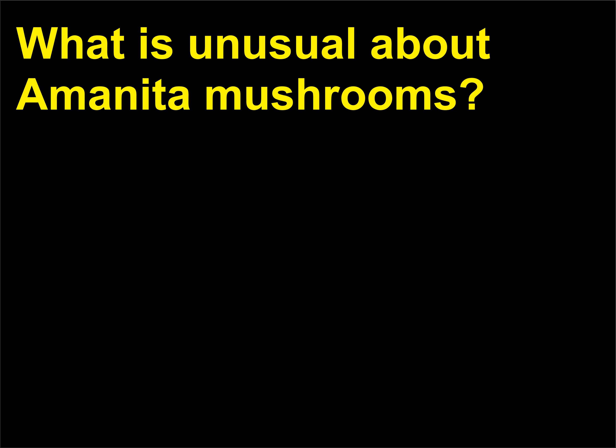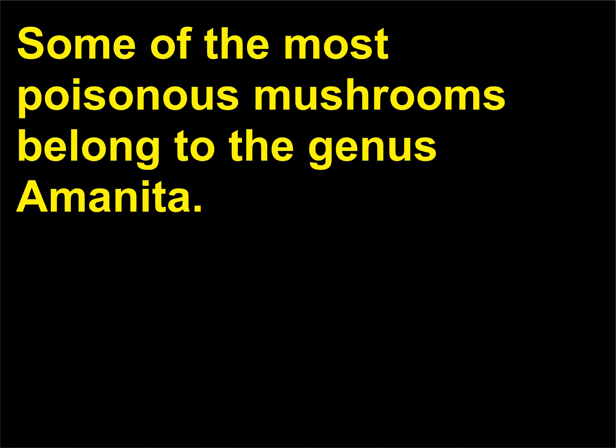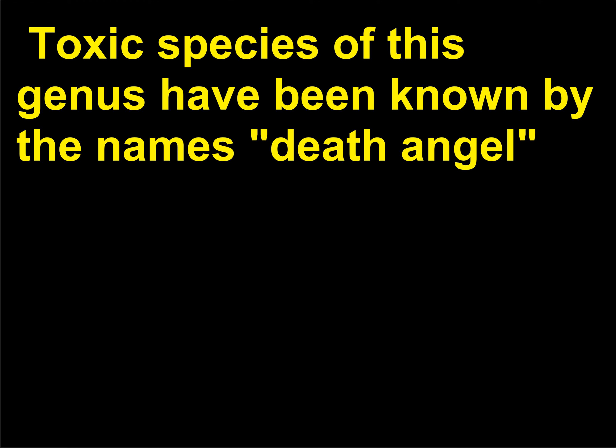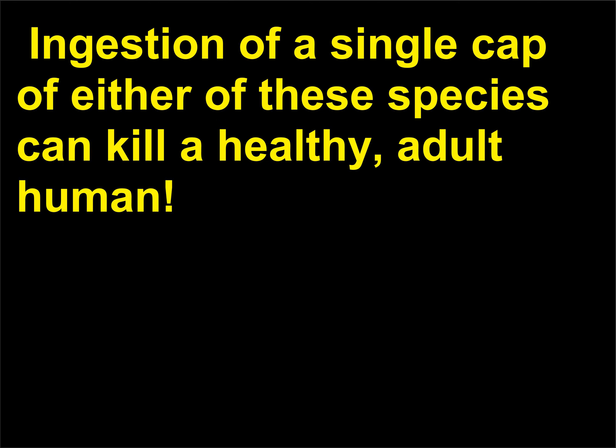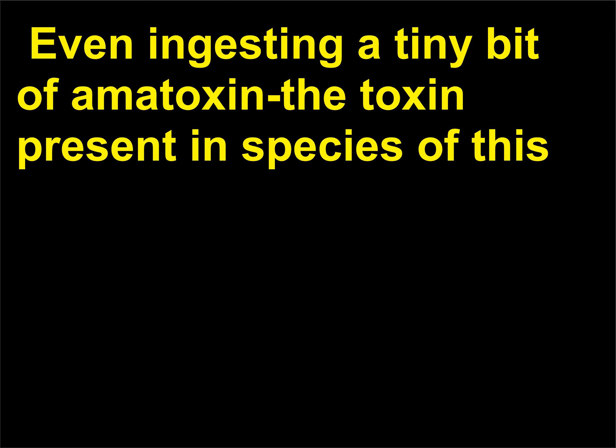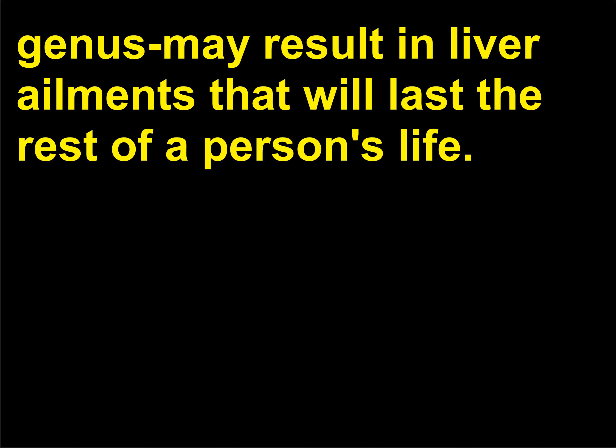What is unusual about Amanita mushrooms? Some of the most poisonous mushrooms belong to the genus Amanita. Toxic species of this genus have been known by the names Death Angel (Amanita phalloides) and Destroying Angel (Amanita virosa). Ingestion of a single cap of either of these species can kill a healthy adult human. Even ingesting a tiny bit of Amanita toxin may result in liver ailments that will last the rest of a person's life.